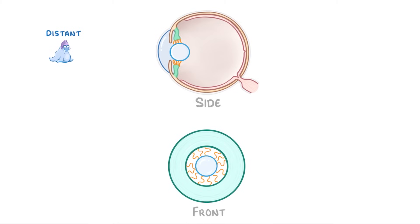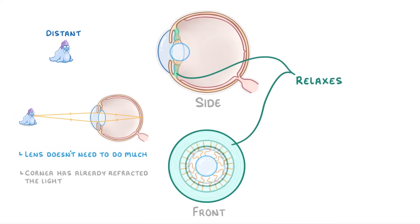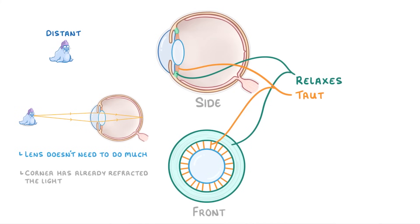Meanwhile, for distant objects, the light doesn't need to be refracted as strongly, which means that the lens doesn't need to do as much, because the cornea has already refracted the light most of the way. To reduce the refractive power of the lens, it needs to be stretched out so that its surface is less curved. In order to achieve this, the ciliary muscle relaxes, moving away from the lens and pulling the suspensory ligaments taut, which stretches the lens out.